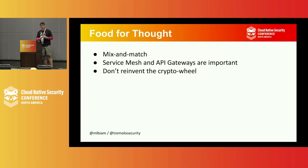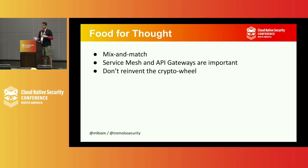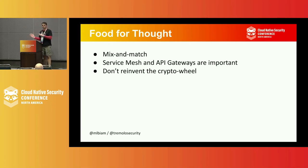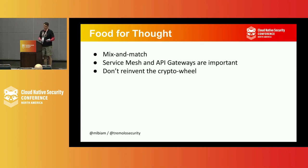Service meshes and API gateways are really important, and the line has gotten fuzzier over the last couple of years as to whether you'd use a service mesh or an API gateway for authentication. Whichever one you choose — and I'm not going to say one should be used over the other — it's really going to depend on your situation. Don't try to reinvent the wheel, because chances are it will go horribly wrong. Inventing your own authentication systems is like inventing your own crypto — don't do it. There are a lot of standards out there with thousands of hours of peer review and thousands of implementations. Stick with those standards.